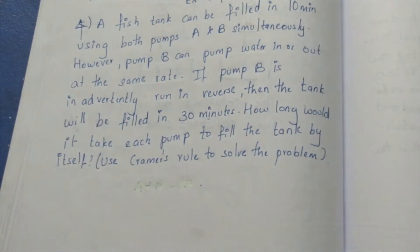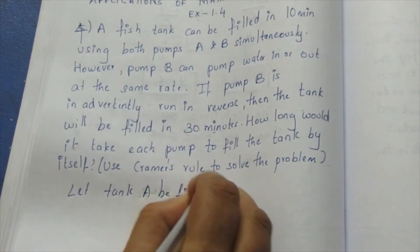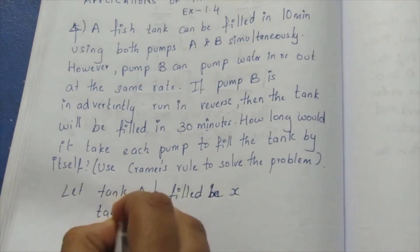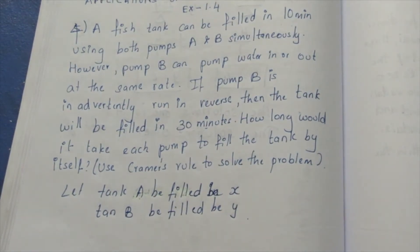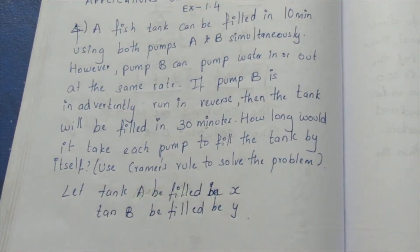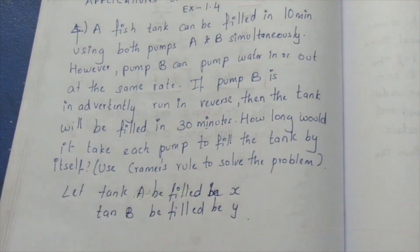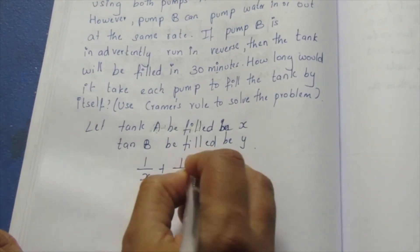First, let's form the equation. Let tank A be filled in X and tank B be filled in Y. Since power and time are inversely proportional, we can write 1 by x plus 1 by y equal to 1 by 10.